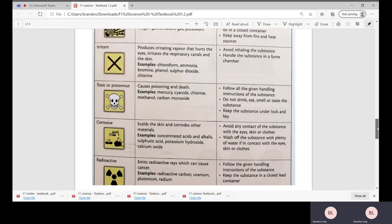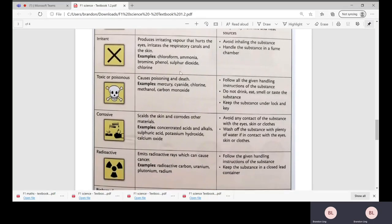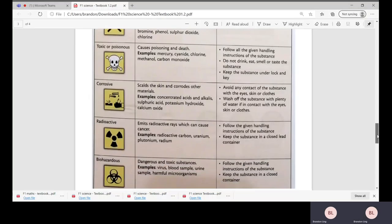Next we move on to this symbol called irritant, because it will irritate our skin and respiratory canals. Examples would be chloroform, ammonia gas, bromine, phenol, sulfur dioxide, and also chlorine. Chlorine gas is usually given out at the swimming pool, so whenever you go to a swimming pool, pay attention to the chlorine gas smell.